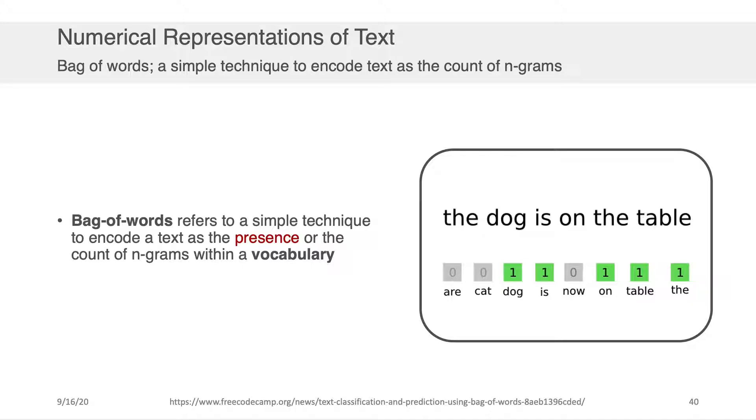Now, notice that the word the in 'the dog is on the table' shows up twice. There's more than one way you can encode a sentence as a bag of words representation. You can either encode it based on the presence of the words, or you can encode it based on the count of the words or the n-grams.